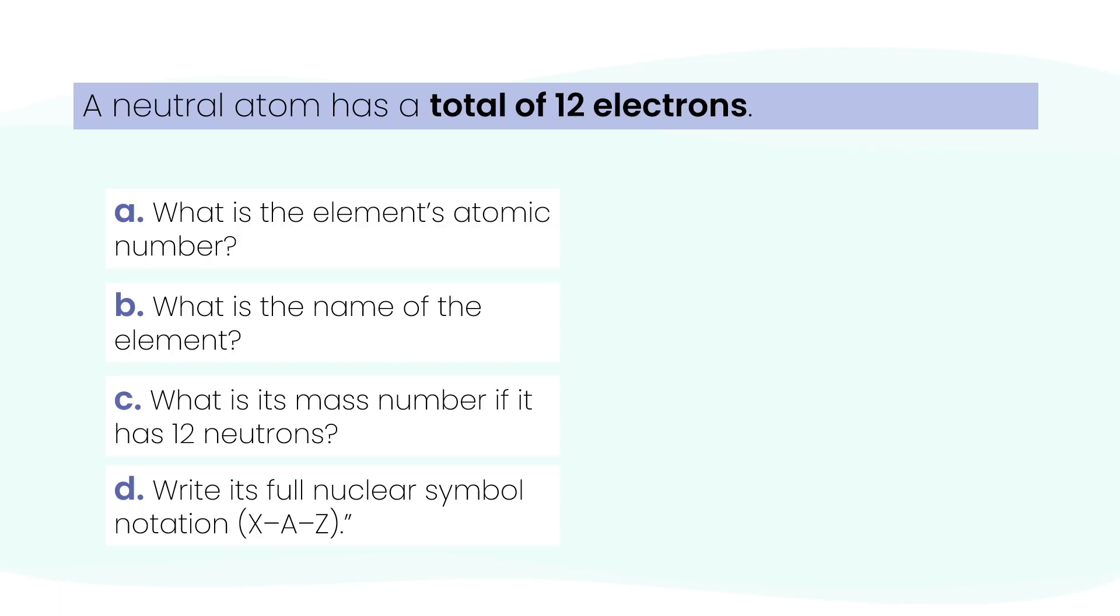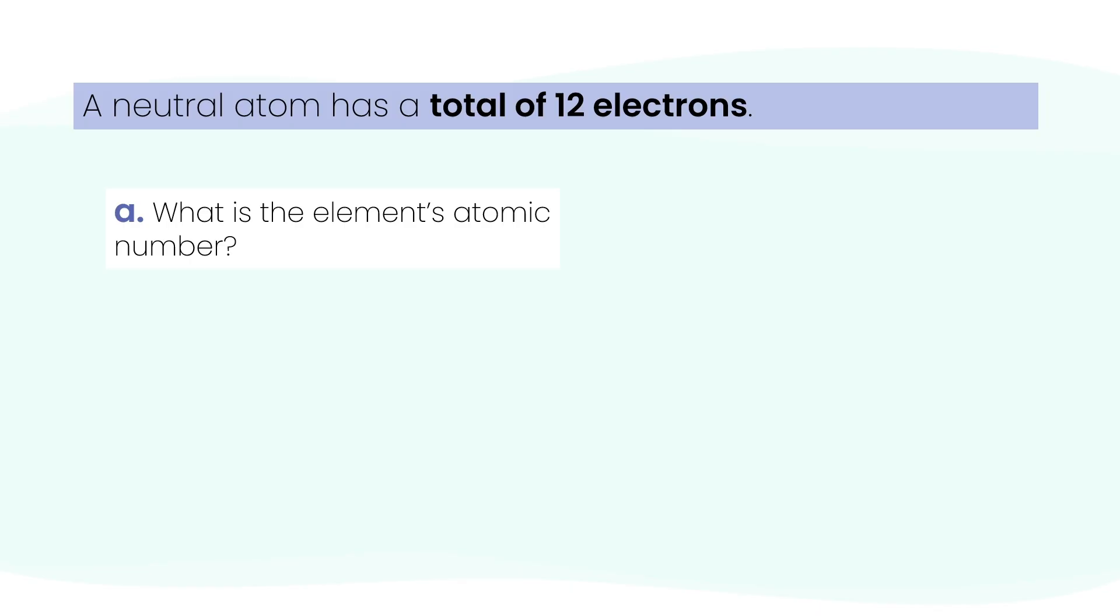Let's try one more. You're told that a neutral atom has a total of 12 electrons. From that single clue, what can we figure out? For letter A, what is the element's atomic number? Since it's neutral, the number of electrons equals protons. That means Z equals 12.